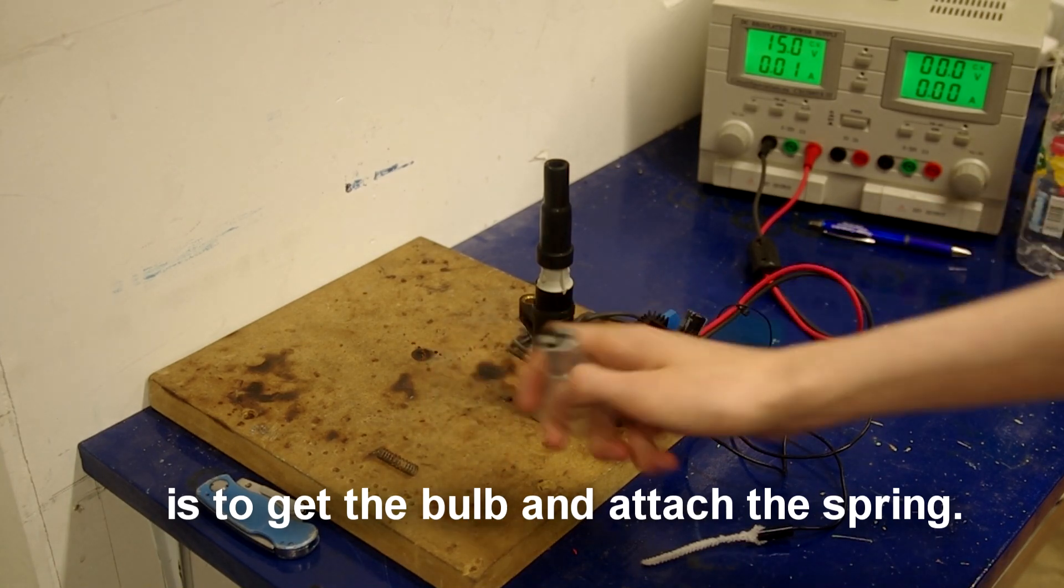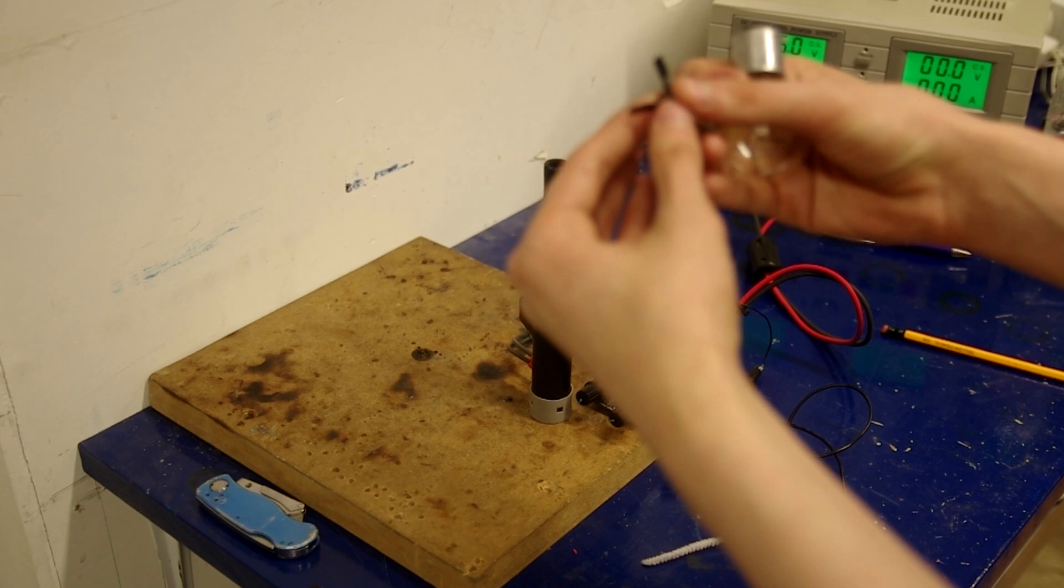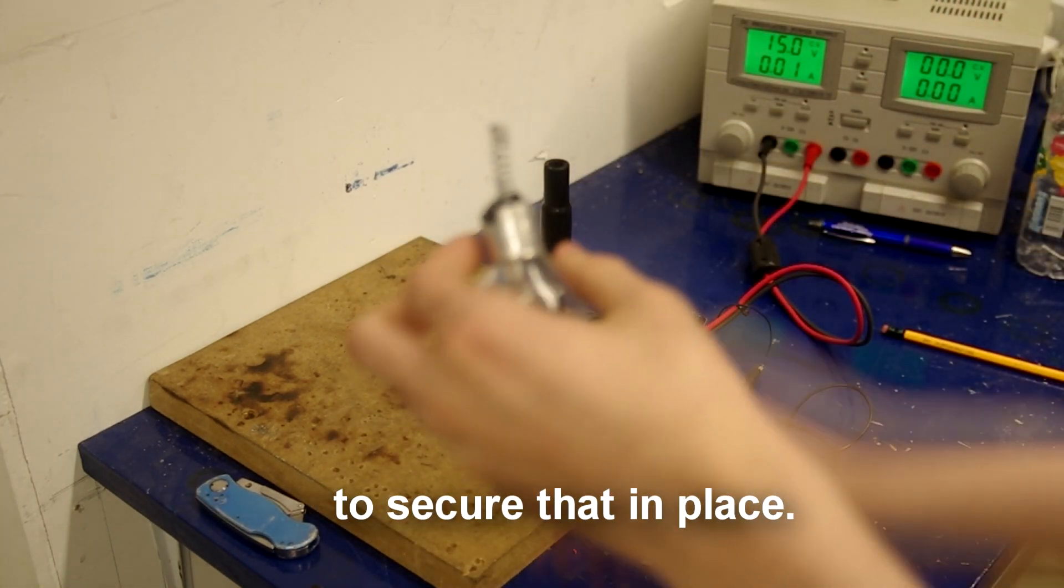The first thing I'd like to do is to get the bolt and attach the spring. To do that just put the tape in the spring and fasten it in. And you can use a little bit more of the wire tape to secure it in place.